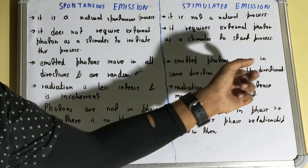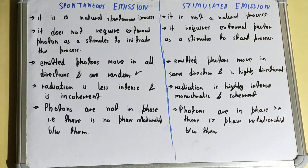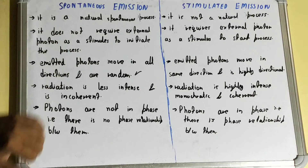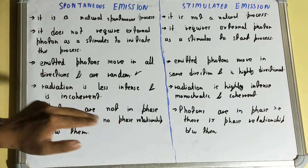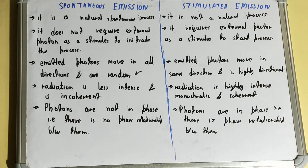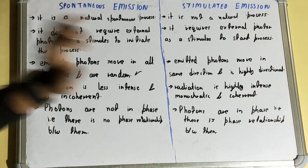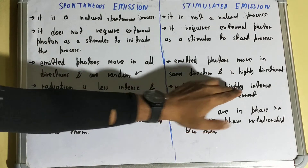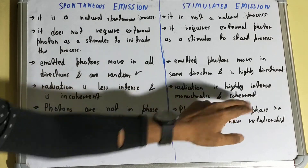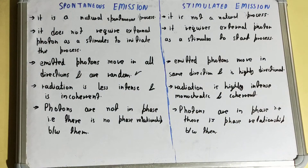Regarding radiation, in spontaneous emission the radiation is less intense and incoherent, meaning it is inconsistent. In stimulated emission, the radiation is highly intense, monochromatic, and coherent — that is, consistent.